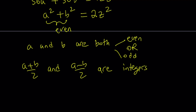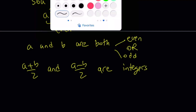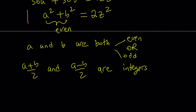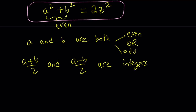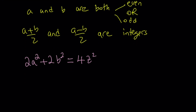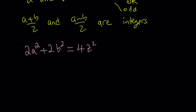Now let's take this equation and multiply both sides by 2 — I'll show you why in a little bit. You could also work with fractions, but I prefer this approach. If you multiply the equation by 2, you get 2a squared plus 2b squared equals 4z squared.